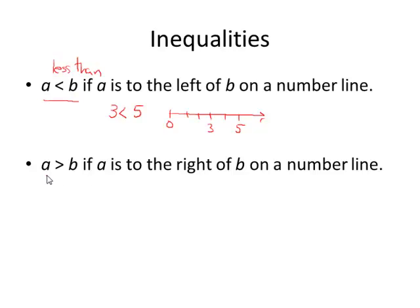We say that a is greater than b if a is to the right of b on the number line. So for example, we say that 4 is greater than 1 because if we look on the number line, 4 is to the right of 1, so 4 is greater than 1.